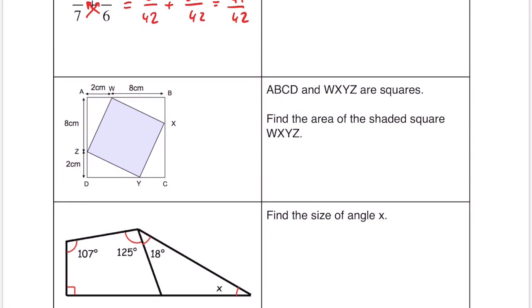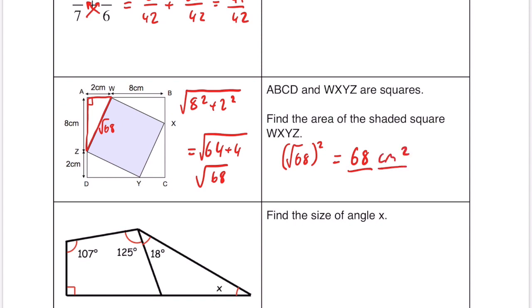Find the area of the shaded square. Now what we have here is a right angle triangle. So if we do Pythagoras we can do the square root of 8 squared plus 2 squared which is going to be the square root of 64 plus 4 which is the square root of 68. That means the side length is root 68 and root 68 squared because it's a square and we're finding the area is just 68. And that would be centimeters squared. Just always look out for those units.